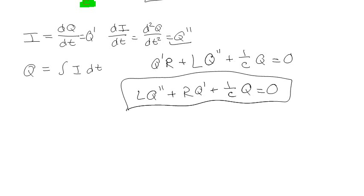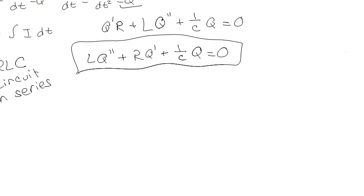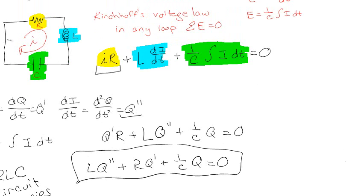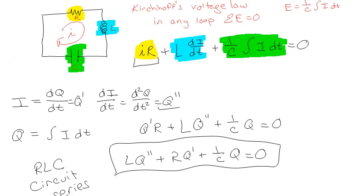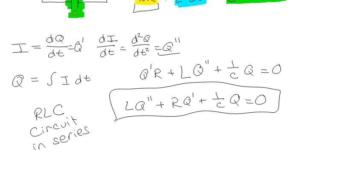This equation applies specifically to an RLC circuit in series — meaning you have to go through each component one at a time. If you have RLC circuits in parallel, that's a totally different situation. The good news is that once you have this equation, you can solve it without needing to recall all the physics.